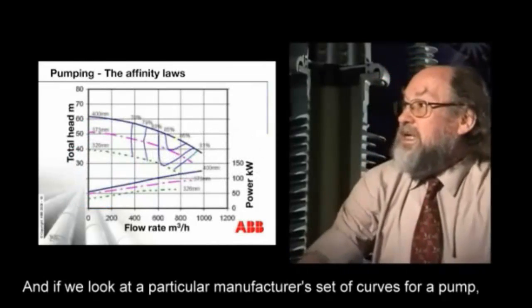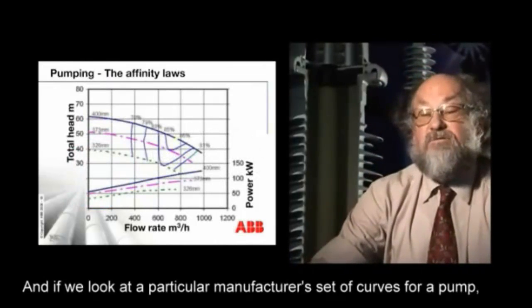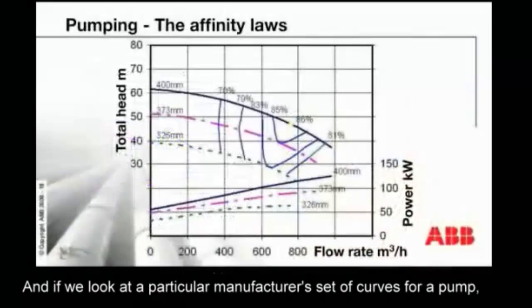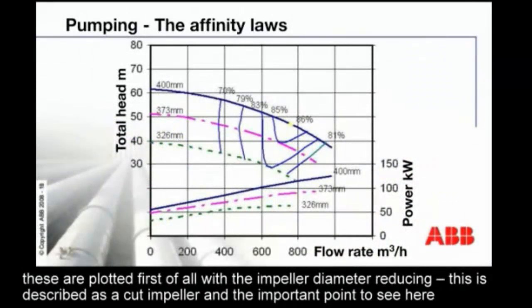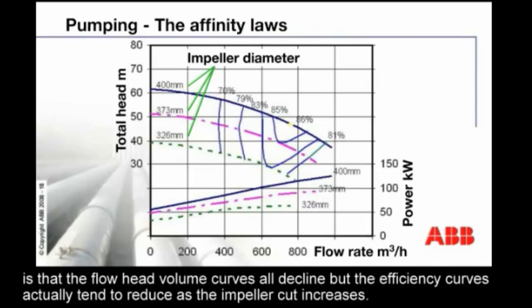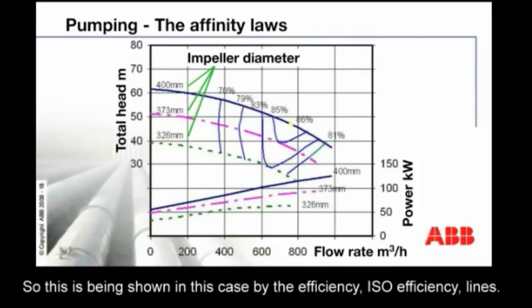If we look at a particular manufacturer's set of curves for a pump, these are plotted first of all with the impeller diameter reducing — this is described as a cut impeller. The important point to see here is that the flow-head-volume curves all decline, but the efficiency curves actually tend to reduce as the impeller cut increases. This is shown by the ISO efficiency lines.